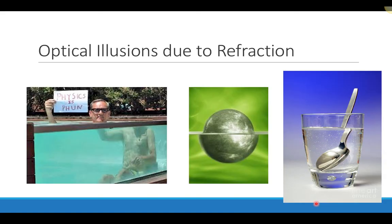Refraction can cause a lot of optical illusions. Here's one where a person's head appears to not be on their body — this is strictly an optical illusion. The person is inside a tank of water, and because of the way light bends, their head appears at one location and their body at another. Light in air doesn't bend, but it does bend below the surface, creating that optical illusion.